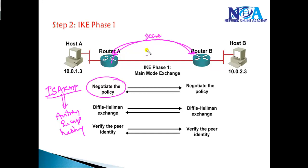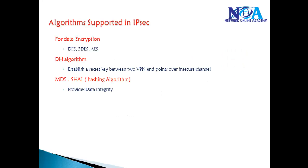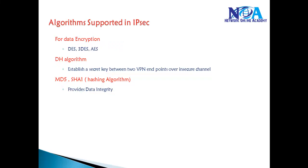There are different options supported in IPSec Phase 1. For encryption we have options like DES, 3DES, and AES — these protocols are responsible for providing encryption. The Diffie-Hellman algorithm is used to establish a secret key between the two VPN endpoints. We also have hashing algorithms like MD5 and SHA, which provide data integrity.